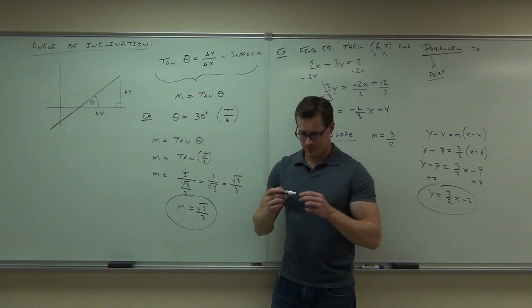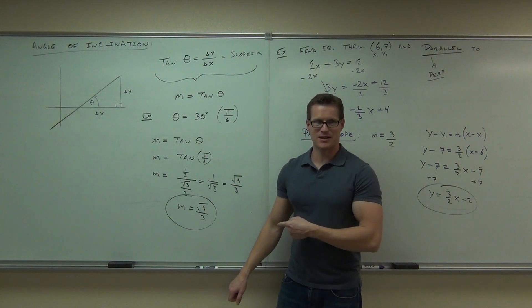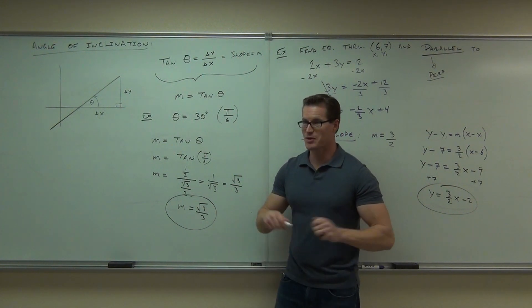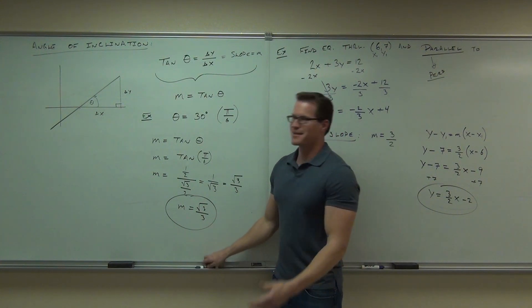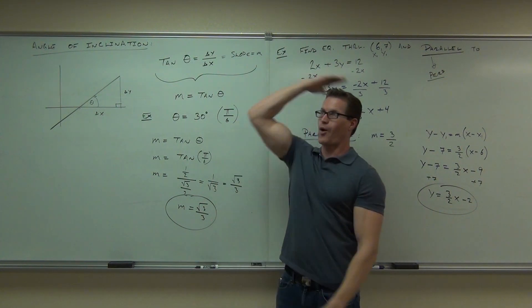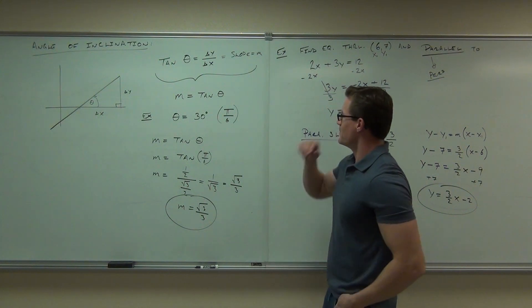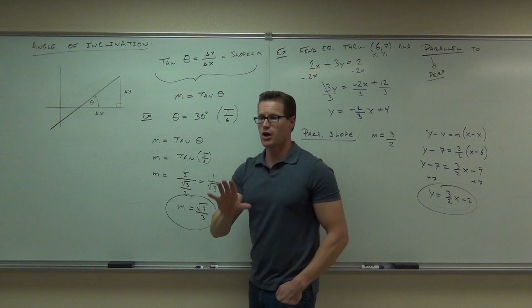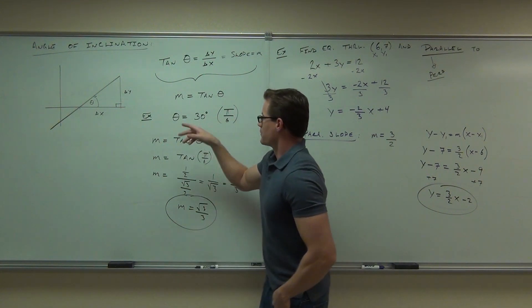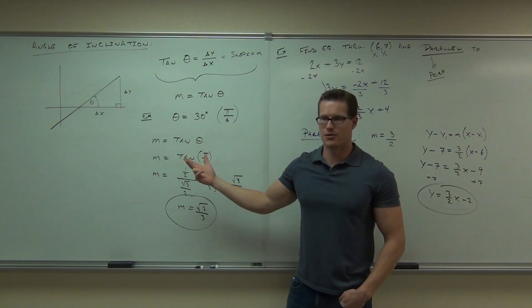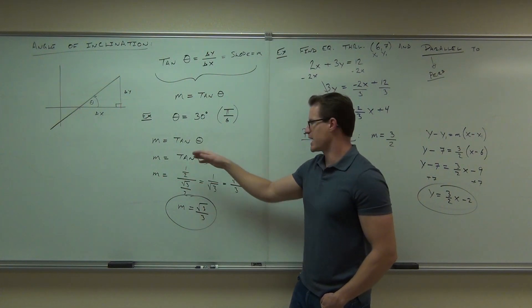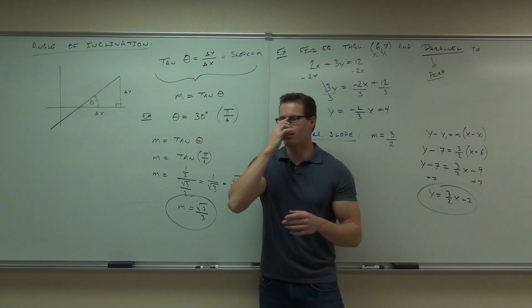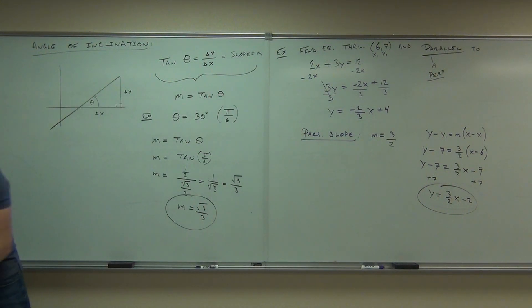Let me recap. Here's what you do to find the slope if you have the angle of inclination. You take your angle, you plug it in, and you figure out the tangent of that angle. That's honestly it. If you can find the tangent of pi over 6, you have your slope. That is your slope. Now, can you go backwards? That's going to be another question for us.